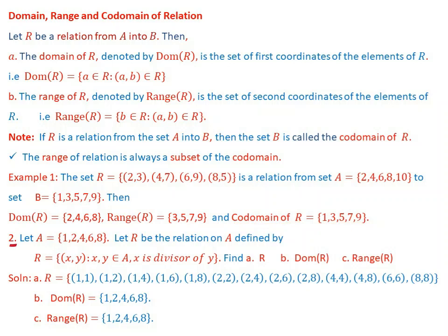Example 2. Let set A = {1, 2, 4, 6, 8} and let R be a relation on set A defined by R = {(x, y) : x and y are elements of set A and x is a divisor of y}. Find the relation R, the domain of R, and the range of R. Our set A = {1, 2, 4, 6, 8} and R is a subset of A cross A, defined by x divides y.